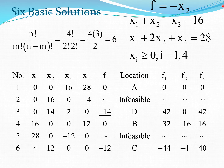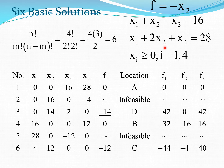We now consider each possible basic solution by taking any two variables and setting them to 0. Setting X1 and X2 equal to 0 and substituting into the equations gives X3 equals 16 and X4 equals 28, with F equals minus X2 equals 0. This is the first of the six basic feasible solutions.